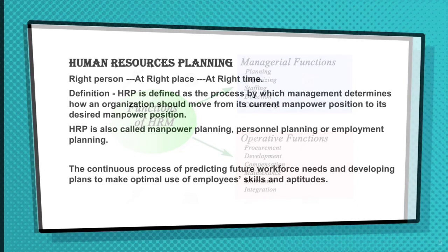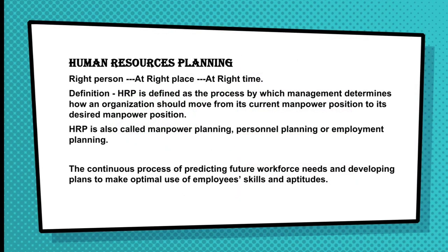Next we discuss HRP — Human Resource Planning. Human resource planning means selecting the right man for the right job at the right place. It is defined as the process by which management determines how an organization should move from its current manpower position, decided based on future manpower needs. HRP is also called manpower planning, personal planning and employment planning. It is the continuous process of predicting the future workforce, bridging the gap between the supply and demand for workers.